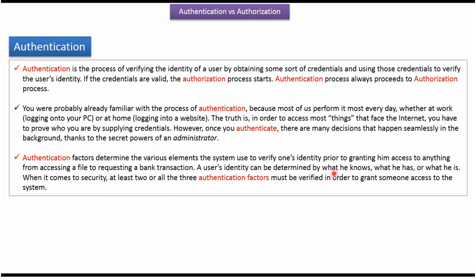A user's identity can be determined by three factors: the first one is what he knows, the second one is what he has, and the third one is what he is. When it comes to security, at least two or all three authentication factors must be verified in order to grant someone access to the system.